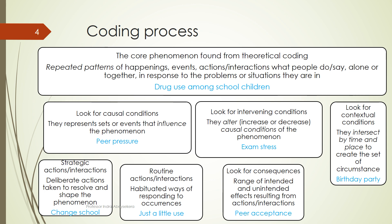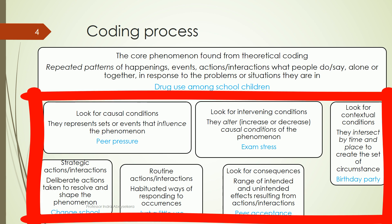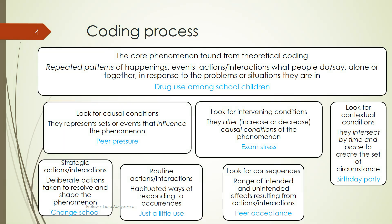We then look for strategic actions and interactions — such as changing schools — or routine actions and interactions, such as how children gradually get used to low-level use. Through this research, we have now found the core theoretical concept along with the causal conditions, intervening conditions, contextual conditions, strategic and routine actions and interactions, and the consequences.